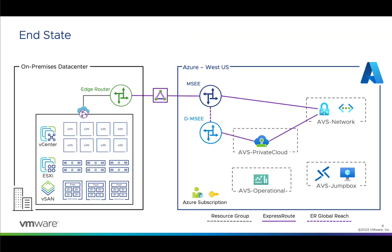We will use the Landing Zone Accelerator to deploy an Azure VMware Solution environment that looks like this. We'll deploy into the West US region, creating separate resource groups for networking, break glass administration, the private cloud object, and operational dashboards.